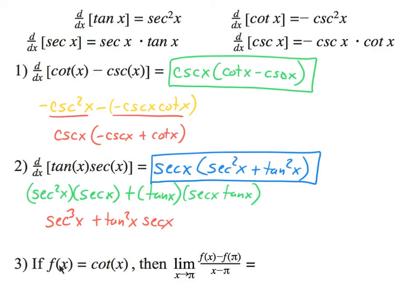Lastly, if f is this, find the limit of this. So what is this limit process? Oh, it's that limit process derivative. So really, what this is, if you remember this, this is really saying take the derivative of f of x, which is cotangent x, and I'm taking the derivative when x equals π. So I'm taking the derivative of cotangent x at π.